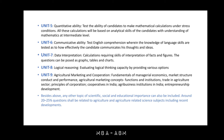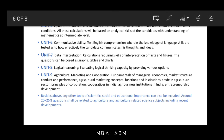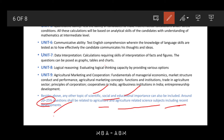Units 5 through 9 also form part of the syllabus. Any other topic of scientific, social, or educational importance can be included. Around 25 to 35 percent of questions shall be related to agriculture and agriculture-related subjects, including horticulture, agronomy, entomology, and so on.